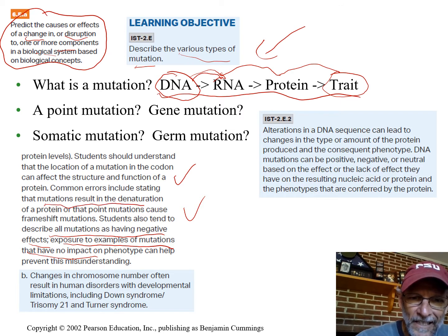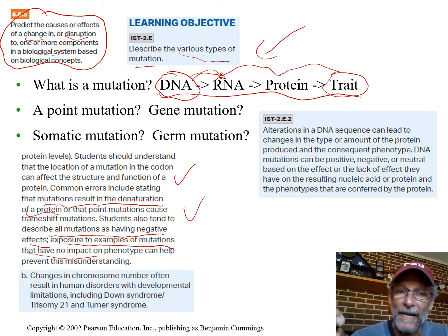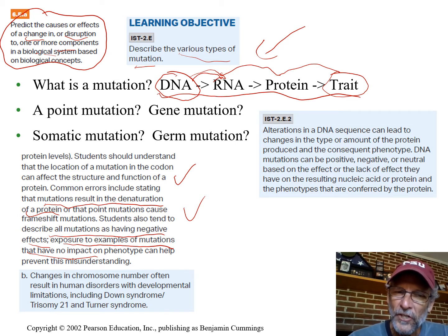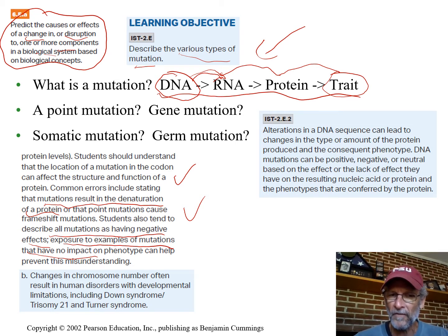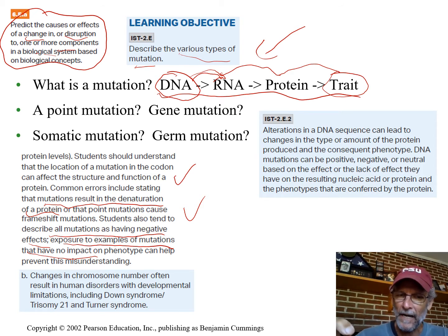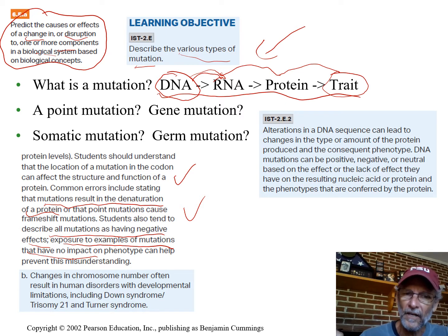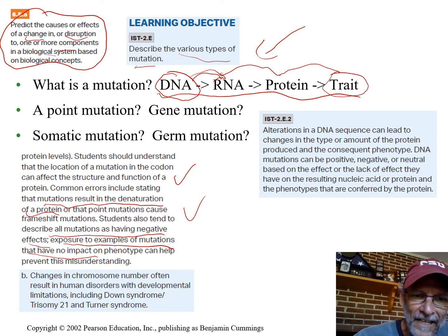A common error is that mutations result in the denaturation of a protein. They might, but denaturation of a protein is more often referred to in terms of heat or pH causing a protein to change its shape — not because DNA was mutated to make a different shaped protein.